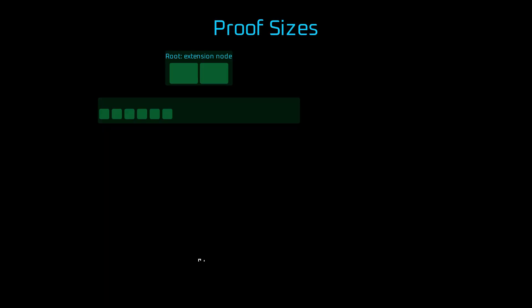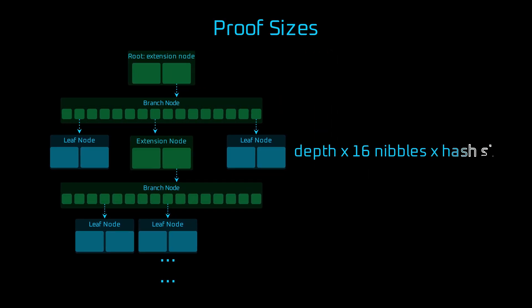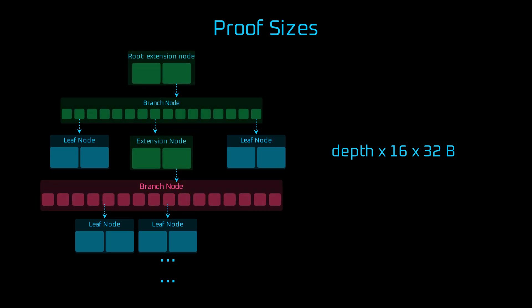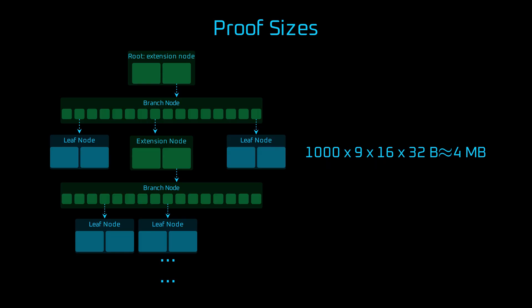Now let's talk about proof sizes. The proof size of an Ethereum Merkle-Patricia trie depends on trie depth. On average, state tries have nine levels. So approximately, proof size equals trie depth multiplied by up to 16 nibbles per branch node — by far the most frequently used node — and a constant size of the keccak hash function of 32 bytes. As an example, for nine levels of depth, a proof of a single account balance weighs around 4 kilobytes. And what if we wanted to prove multiple values? Proving 1,000 account balances leads to up to almost 4 megabytes of data, which is a lot for on-chain standards. Is there a way to make the proof smaller?